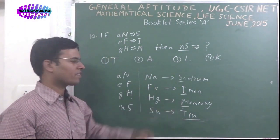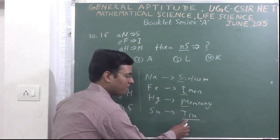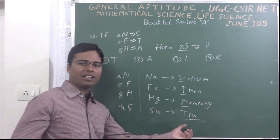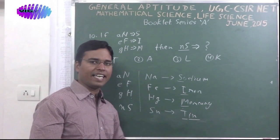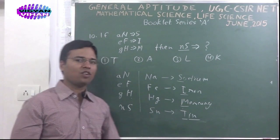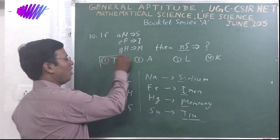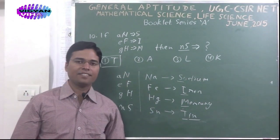The meaning of those codes are the first letters of those elements: S, I, M. The answer of this problem would be the first letter of tin which is capital T. So the correct answer of this problem would be option 1 T.